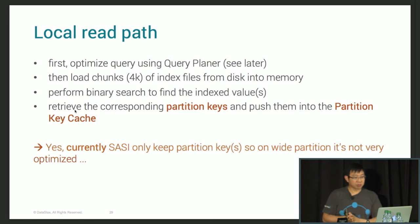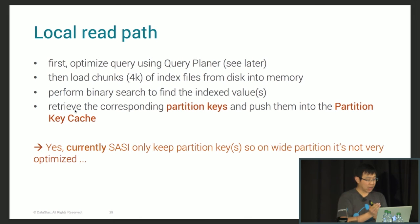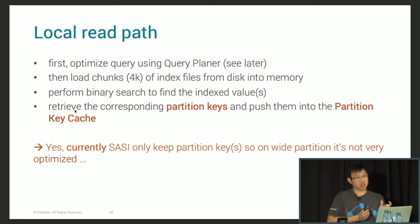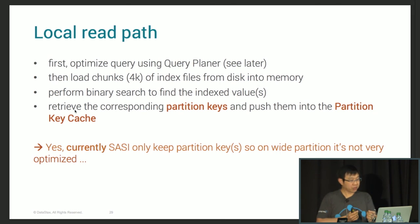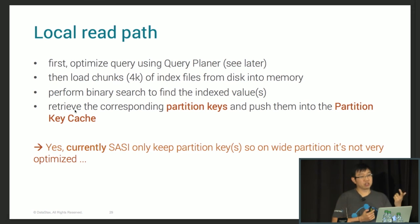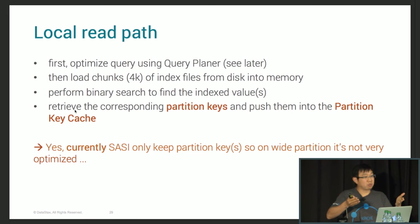For the local read path, your query is first sent to the query planner to optimize the predicates. Then SASI will load chunks of four kilobytes of index data from disk into memory. Why four kilobytes? Because this is the block size of modern drives — SSD or spinning disk. Instead of loading the whole index file into memory, it loads 4KB chunks to perform binary search to find the index value. When found, it also gets the partition offset and populates the partition key cache directly, so when you read the real data from the SSTable, the partition key cache is already hot.